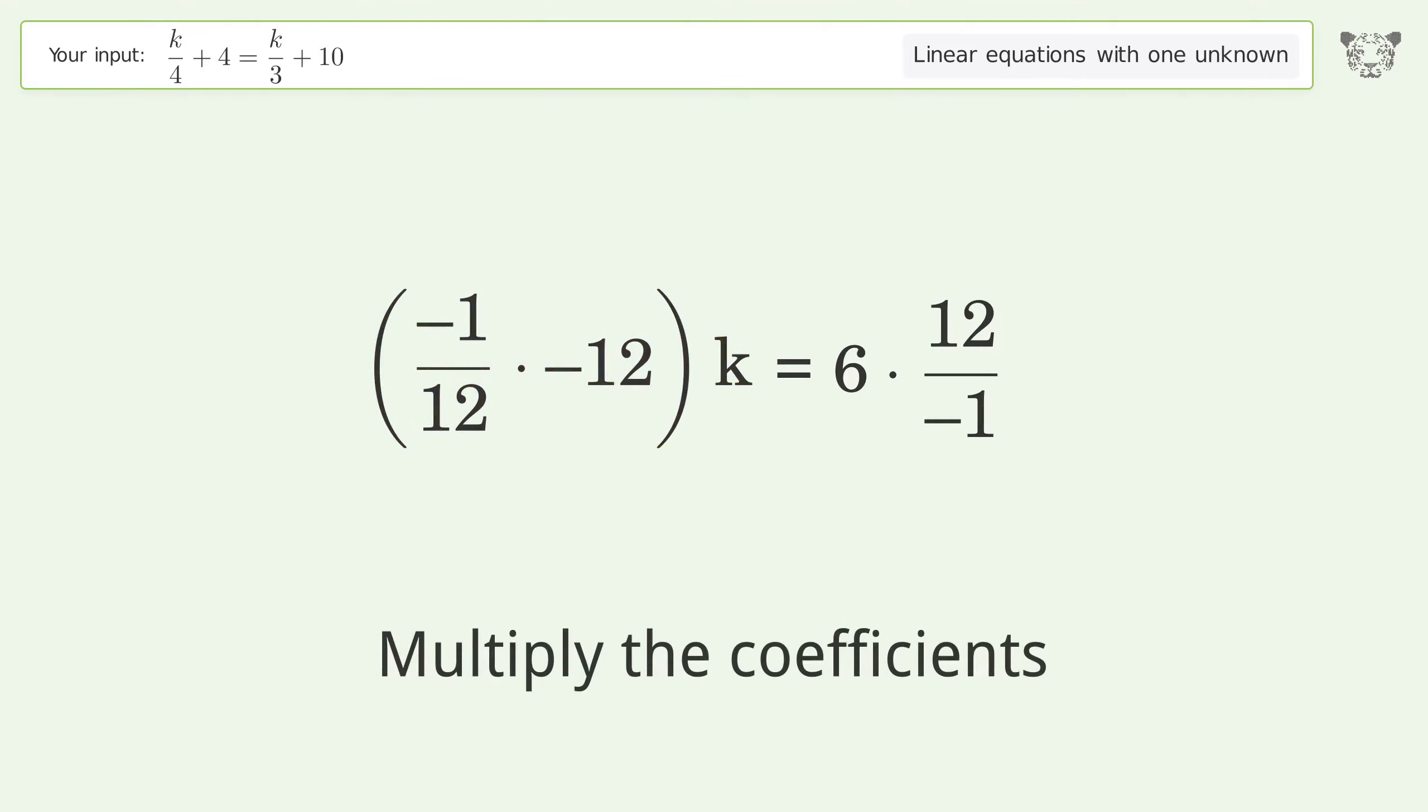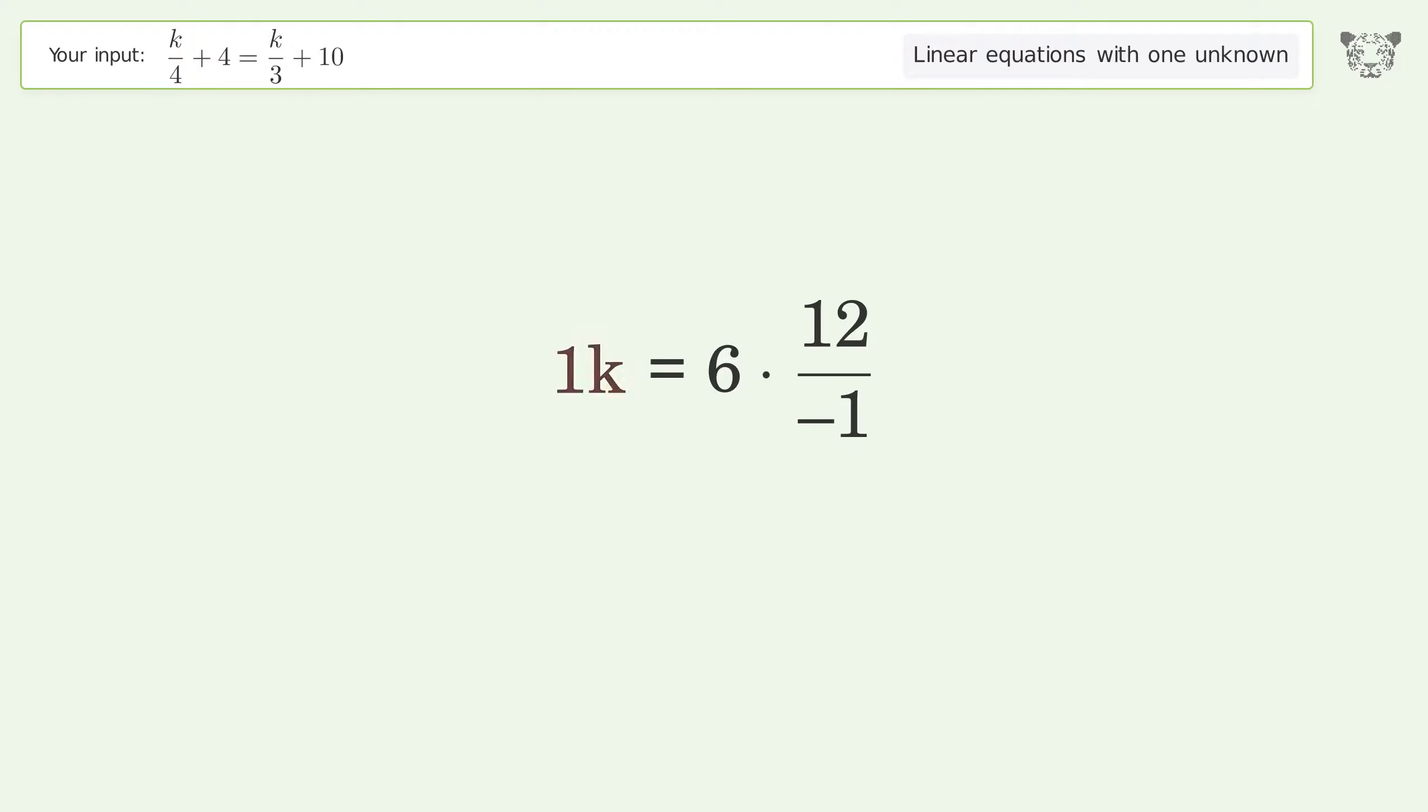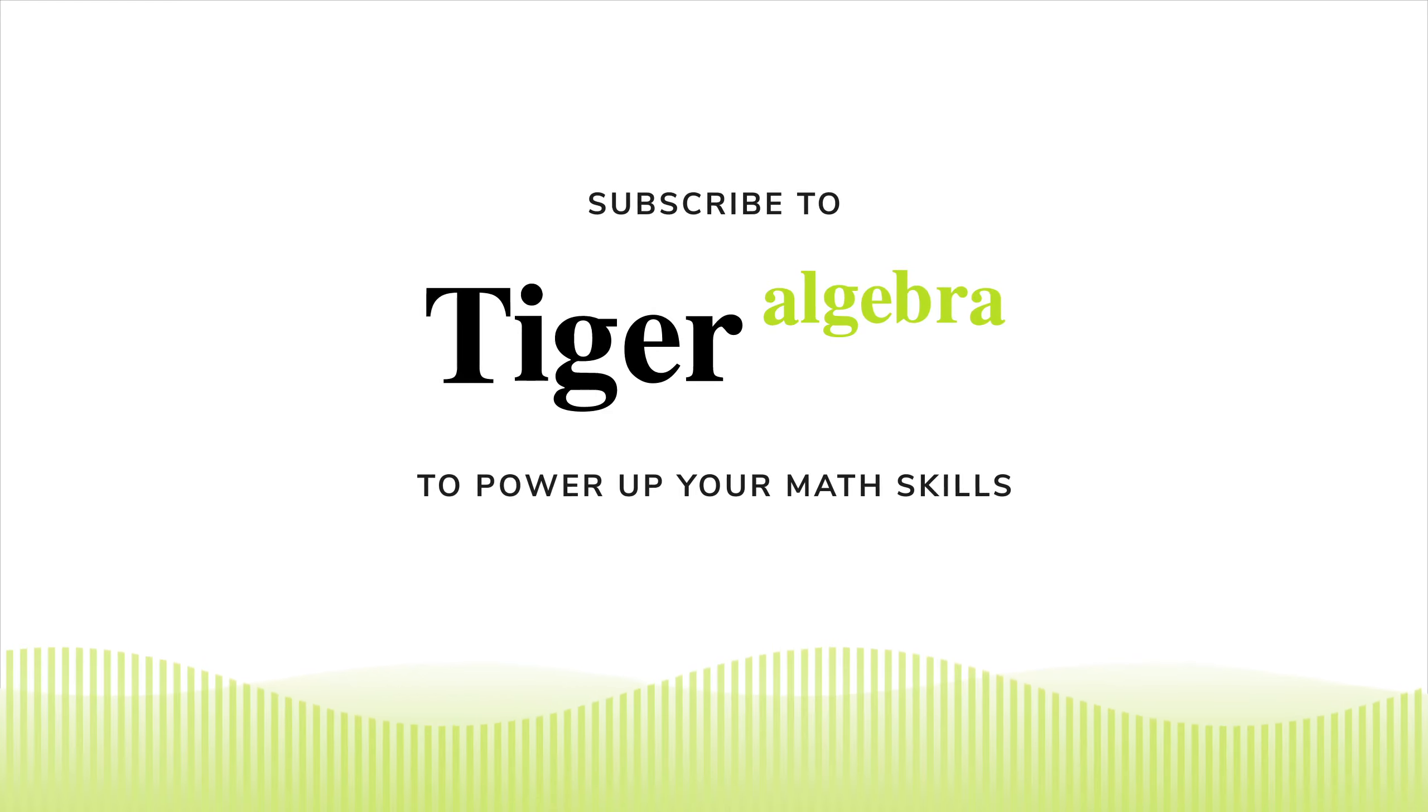Group all constants. Group like terms. Multiply the coefficients. Multiply the coefficients. And so the final result is k equals negative 72.